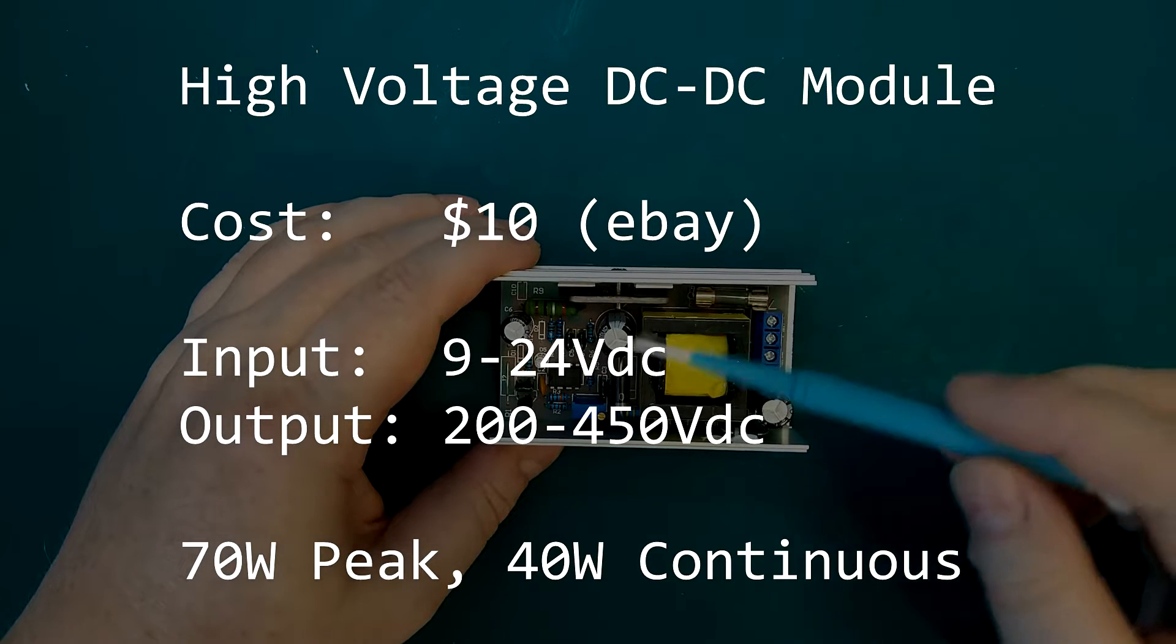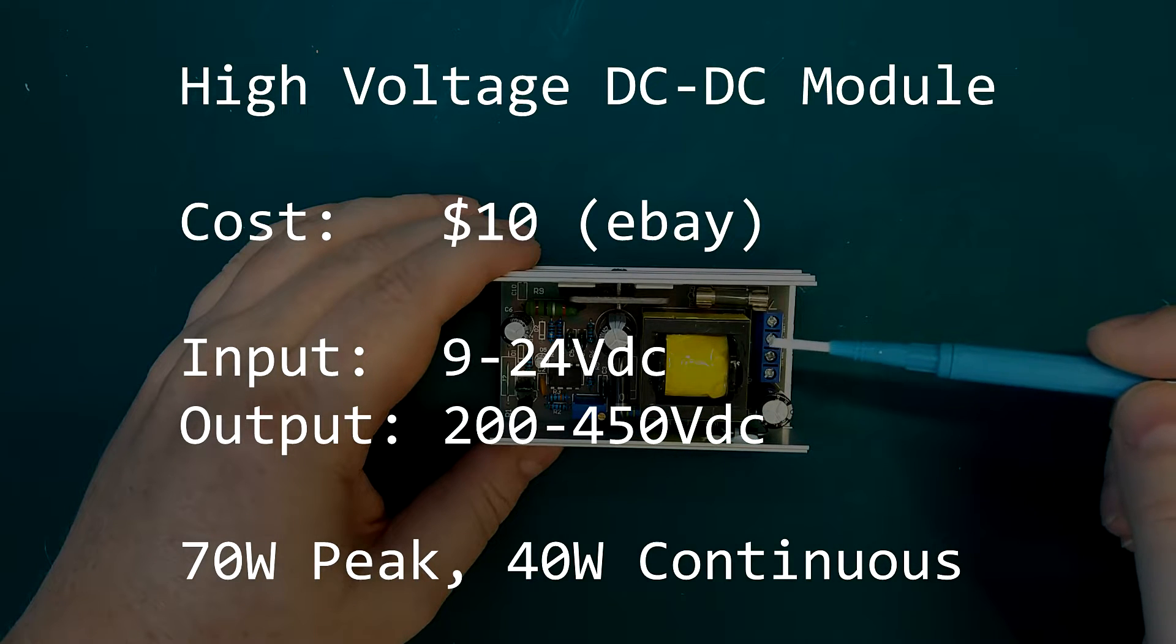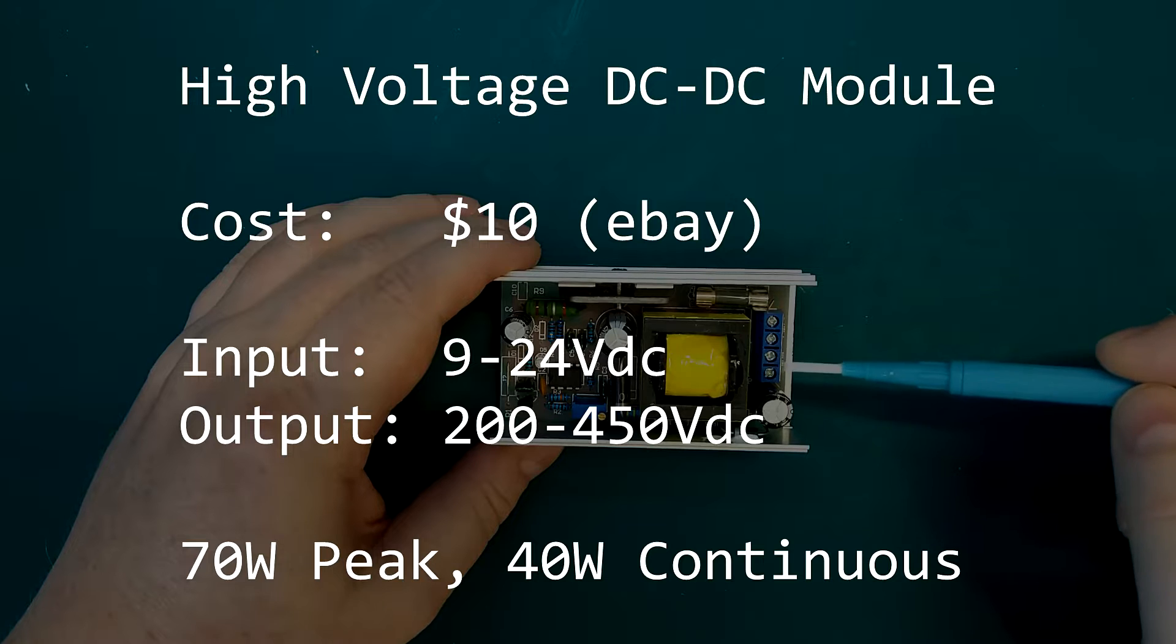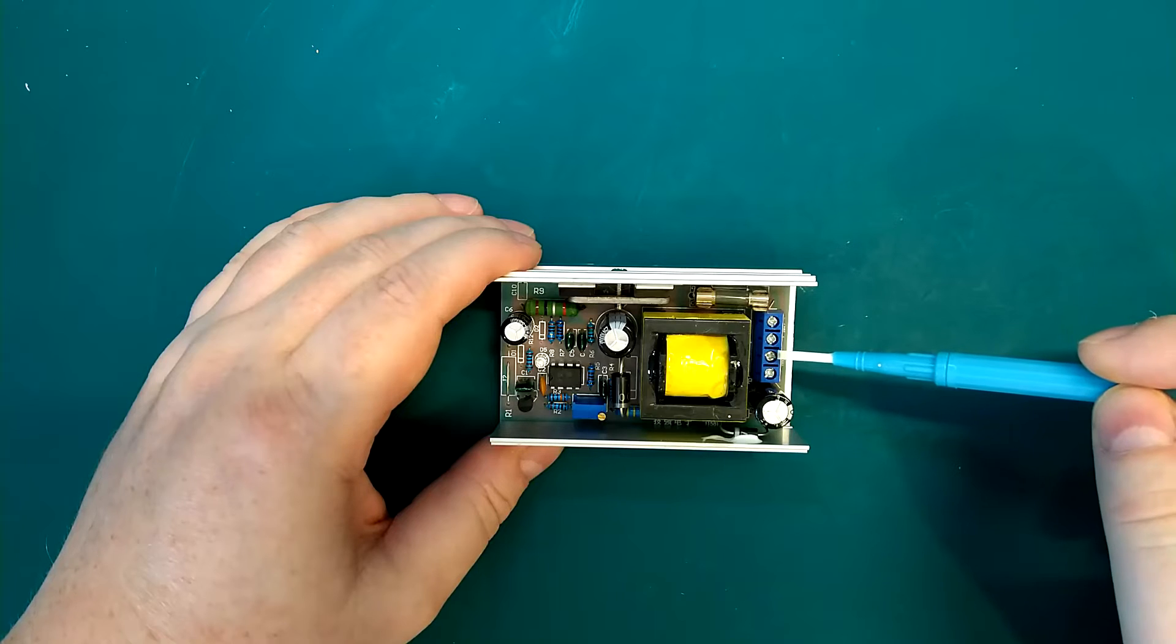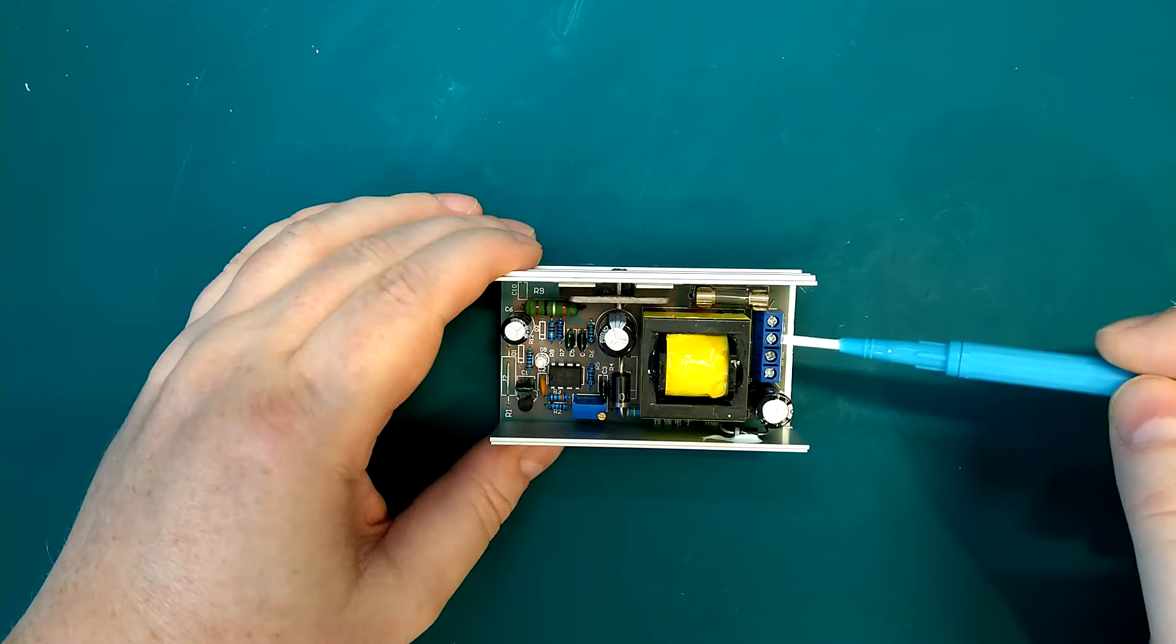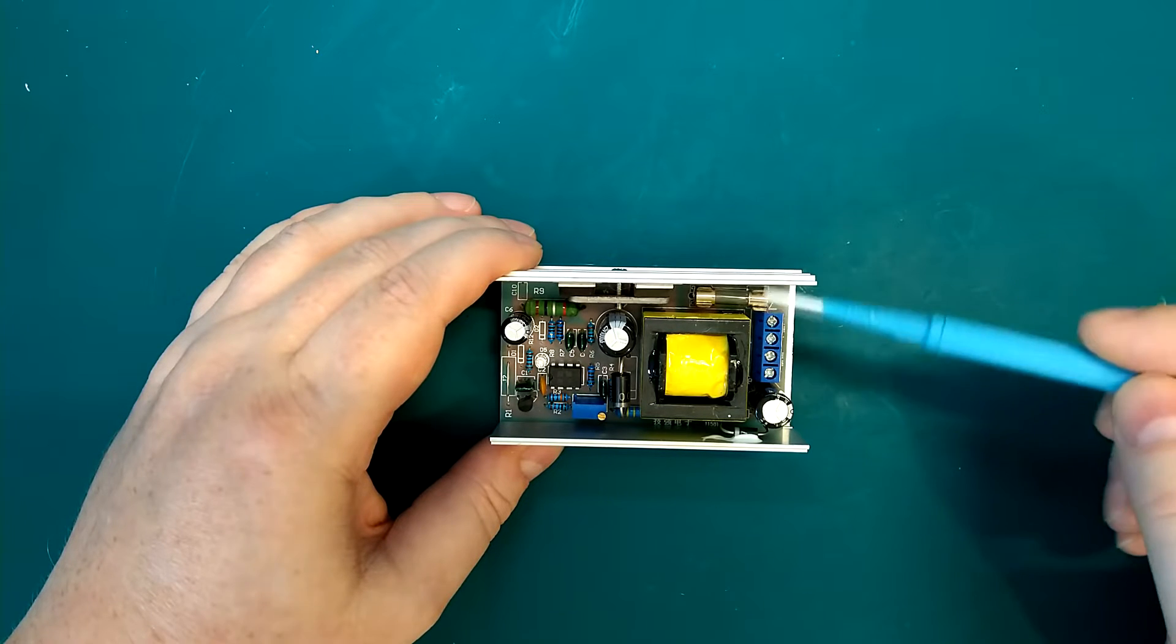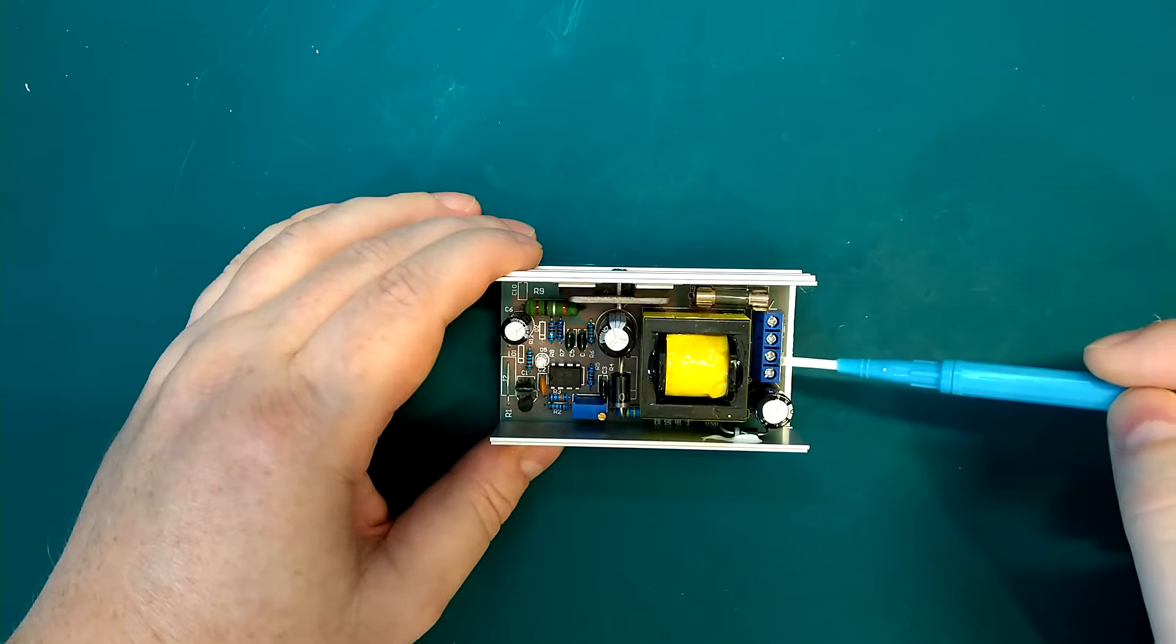Output adjustable from between 200 up to 450 volt DC. The output current is specified in watts, so it says 70 watt peak and 40 watt continuous load.